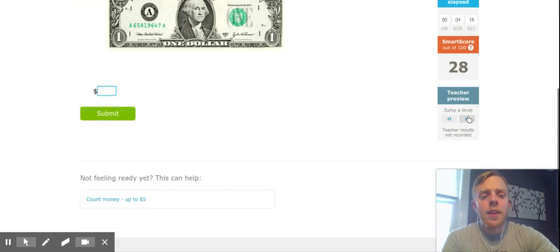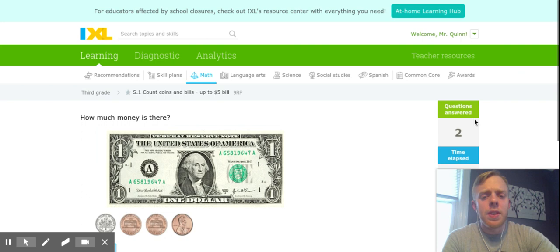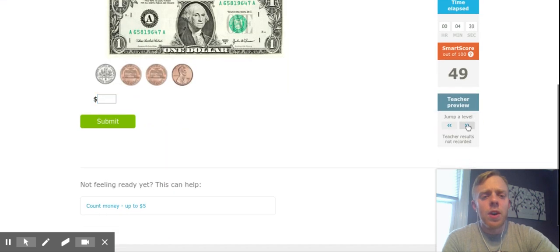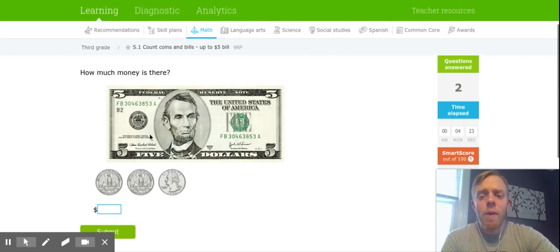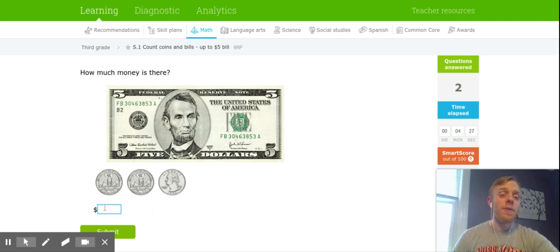All right, and let's go ahead and jump up to what our highest level here might look like. We have a $5 bill and three quarters. Hopefully you know what your quarters are worth: 25 cents a piece. That's 25, 50, 75 cents. And then your five is going to give you $5 and 75 cents.